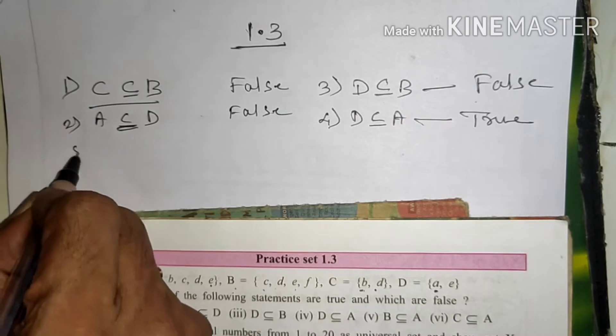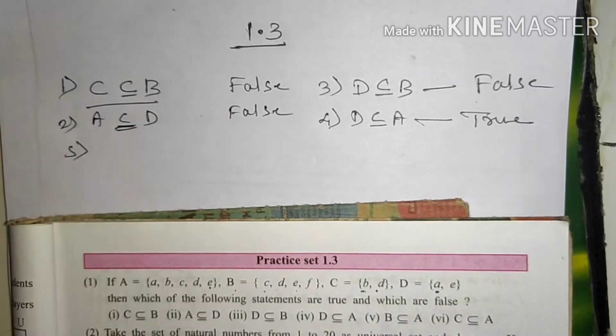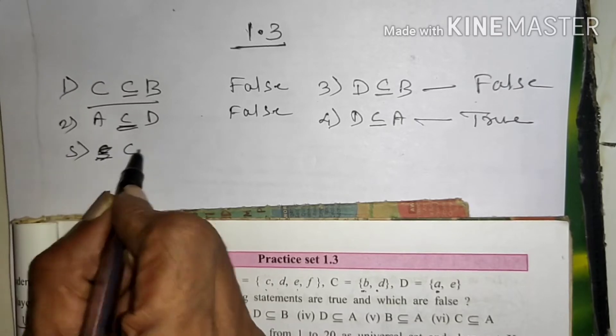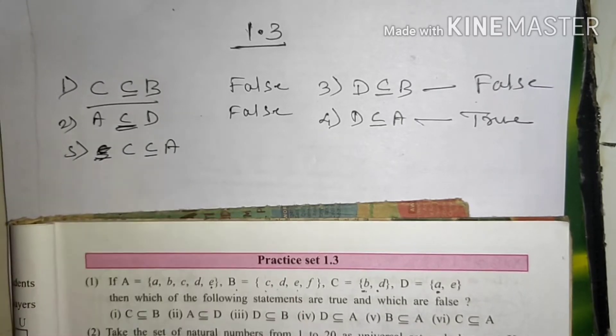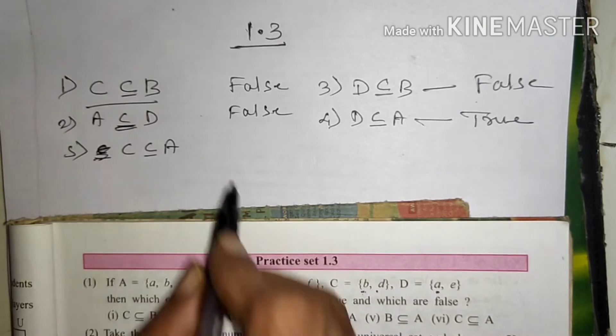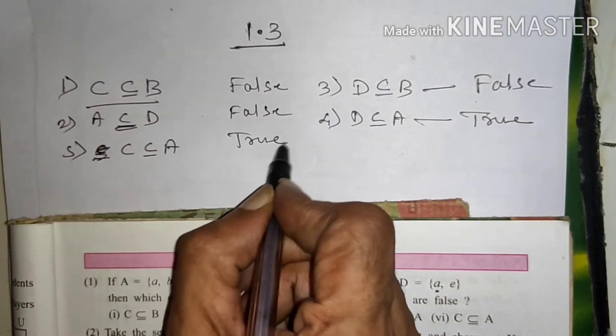Next we'll see panchwaan, which is C subset of A. C K element is B or D, A K element sab hai A, B, C, D, E. So it is also true.